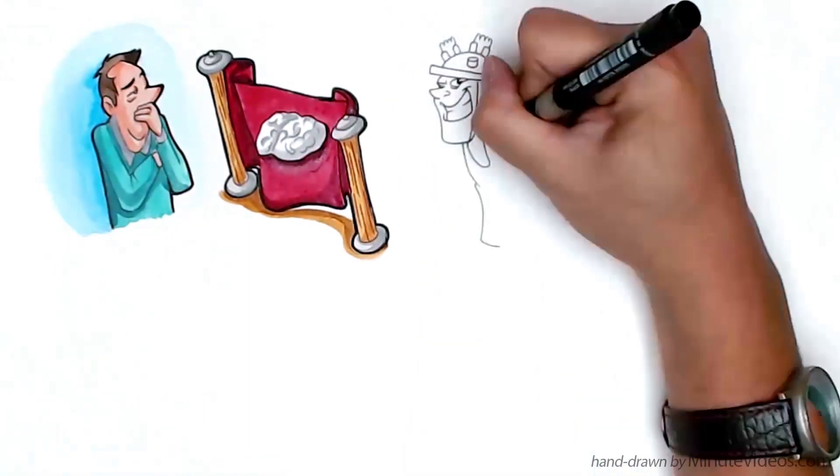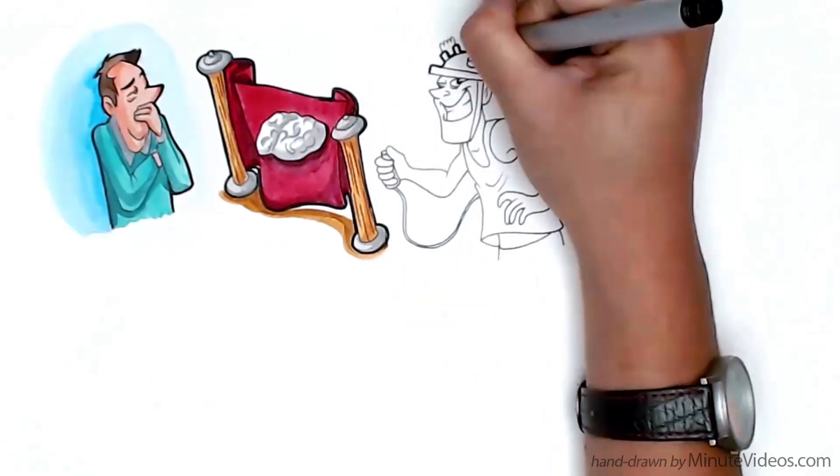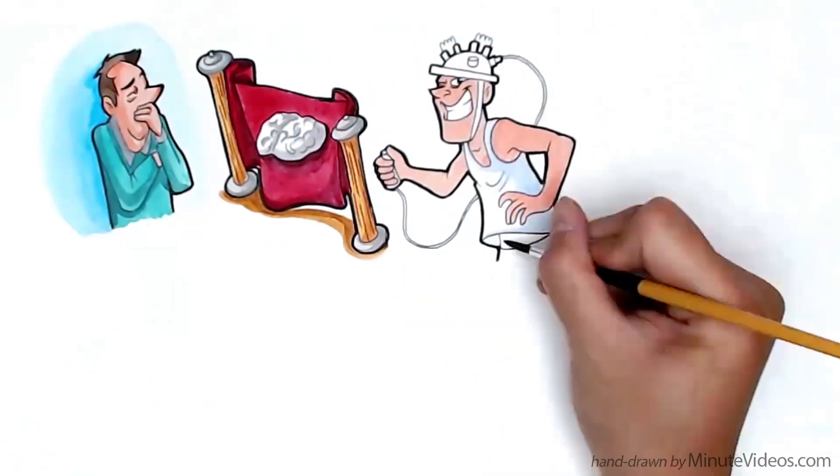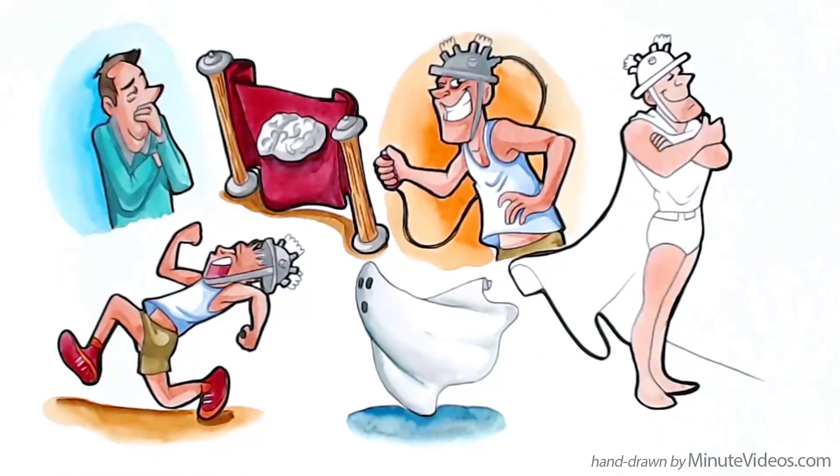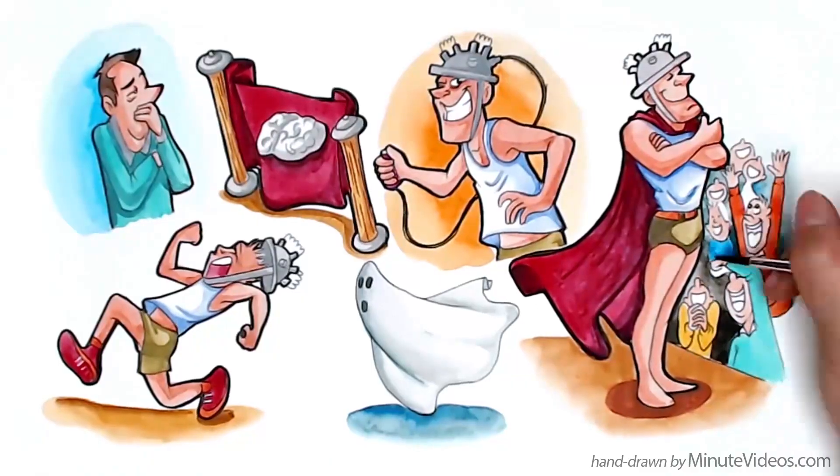So the idea is that System 1 is known as the Automatic System. This is because it acts without conscious effort, like running away when you see a ghost. In our story, System 1 is the hero, a seasoned veteran who never questions his first instinct and is extremely stubborn.